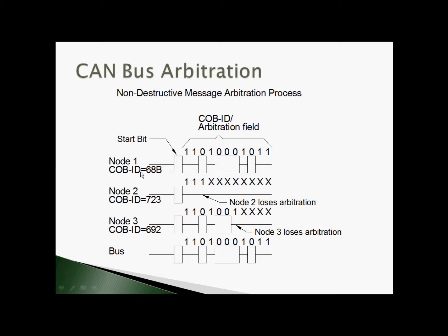As each node transmits, they start with a start bit and begin sending the bits of the arbitration field — the COB ID — from most significant down to least significant. As they transmit, they're also watching the bus. In this example, all three nodes have the first two bits in a high or passive state, so the bus is passive and they continue. On the third bit, nodes one and three are transmitting a zero, which is dominant, while node two is transmitting a one, which is passive. When node two sees that the bus is dominant while it's transmitting a passive state, it drops off, stops transmitting, and waits for the next opportunity to renegotiate.